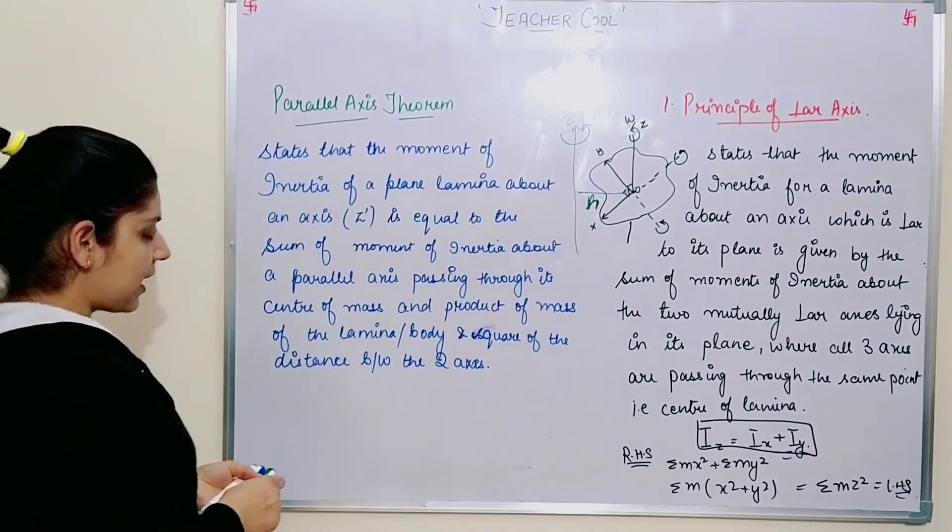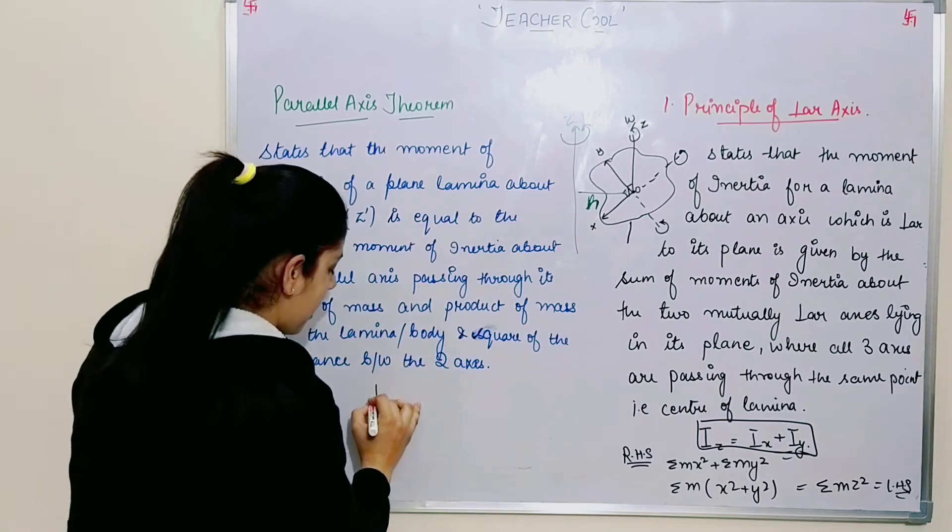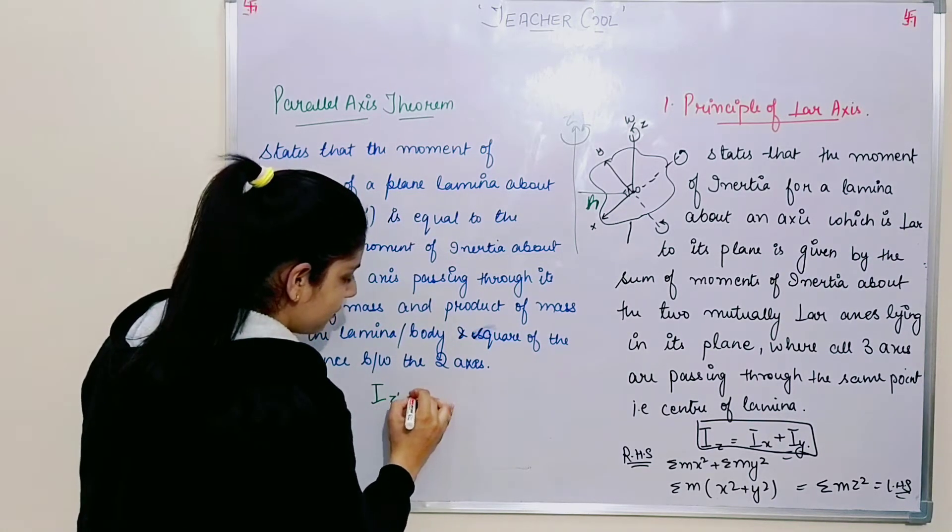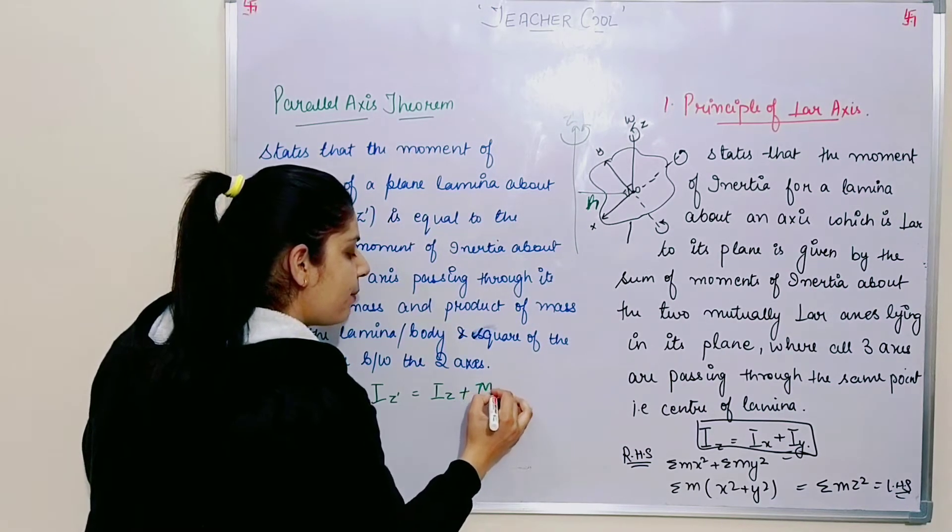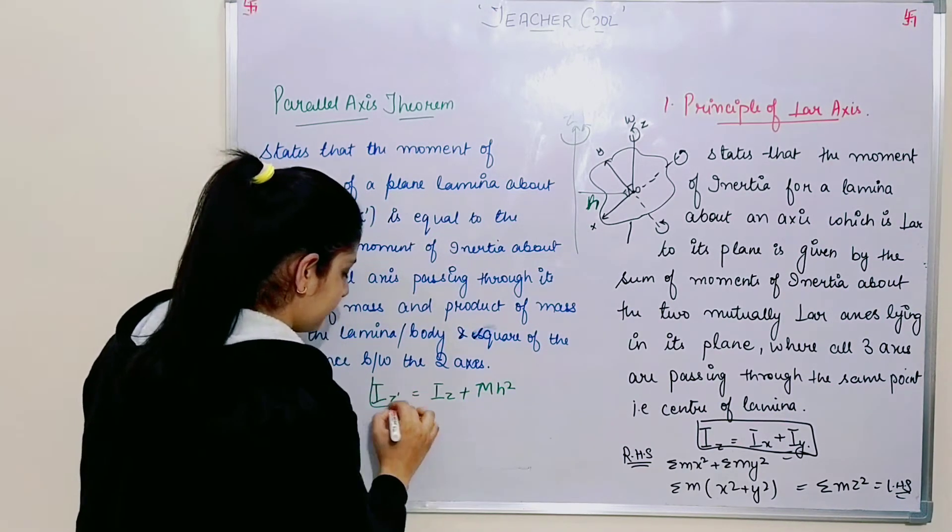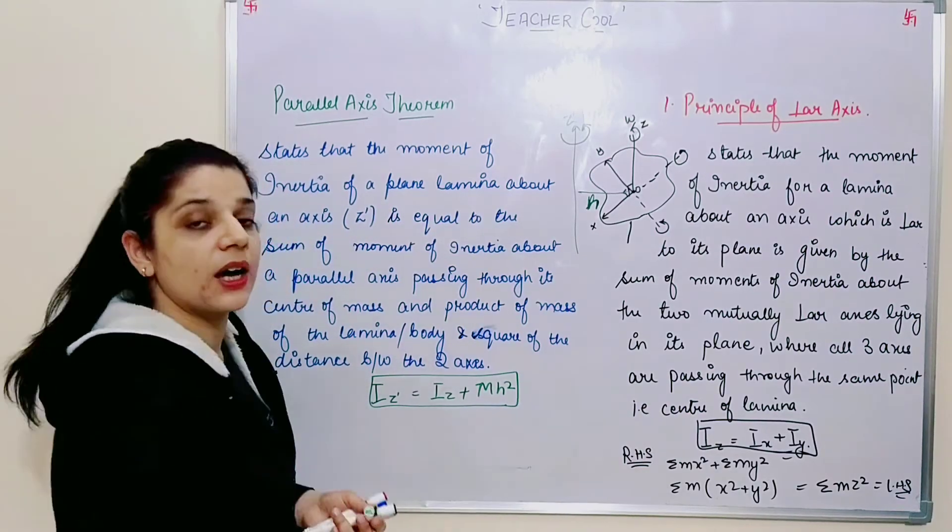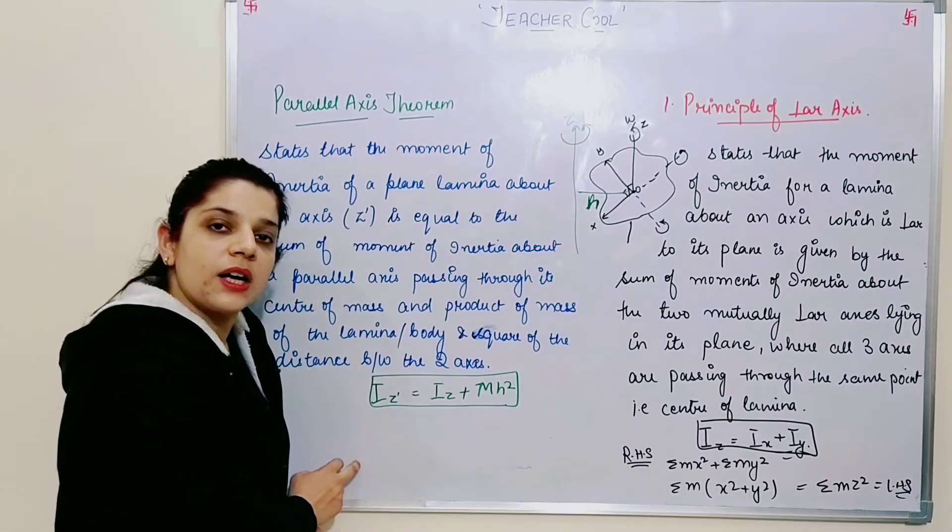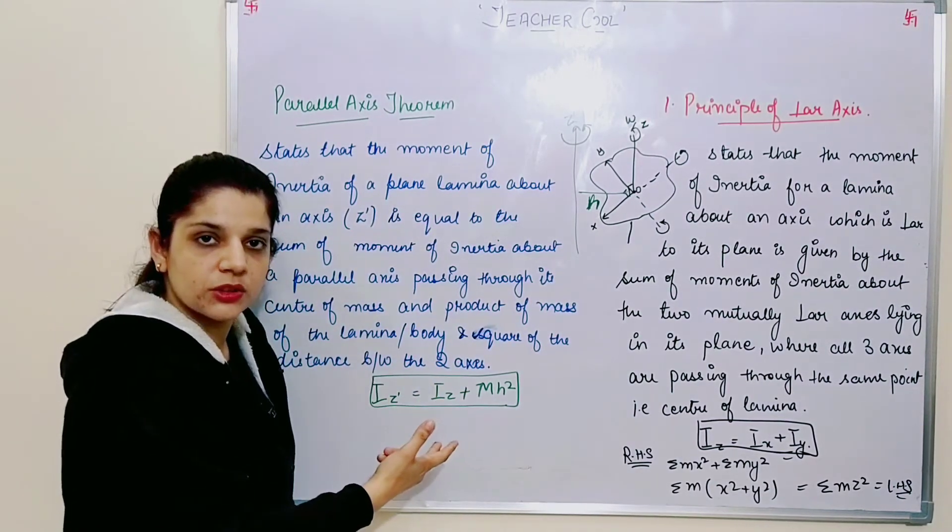So mathematical form of this: IZ dash will be equals to IZ plus MH square. IZ we have already calculated. Now if someone asks me what is the derivation for this?